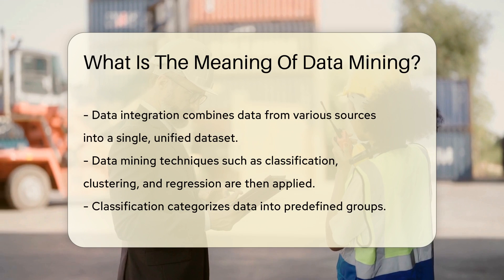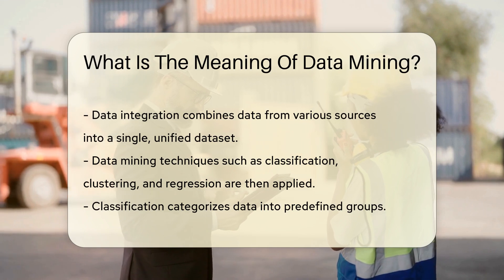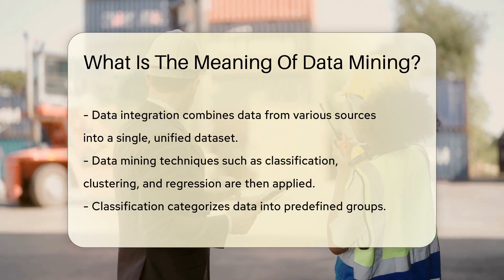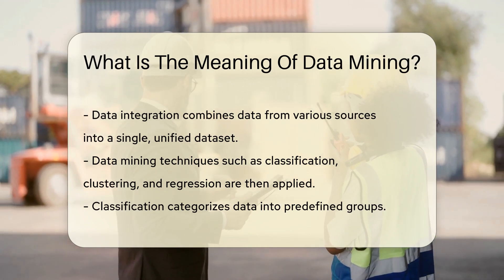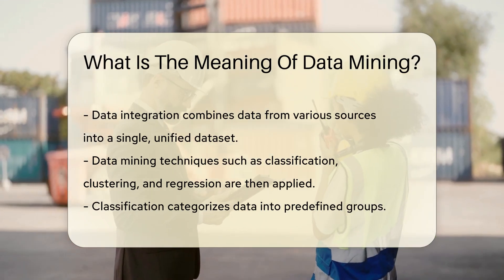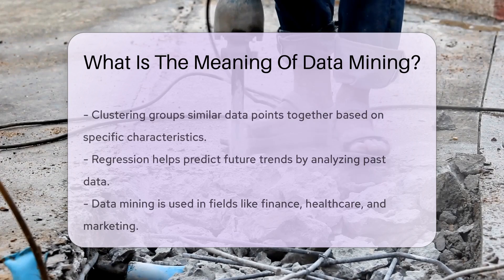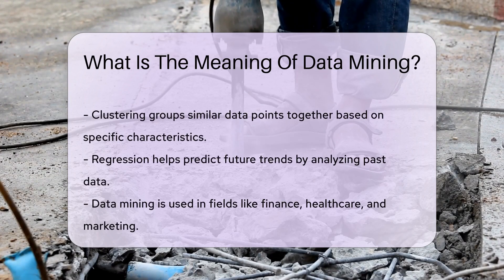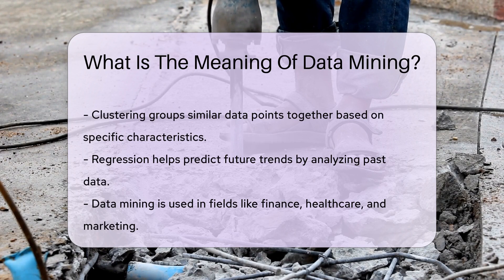Classification is used to categorize data into predefined groups. Clustering groups similar data points together based on specific characteristics. Regression helps predict future trends by analyzing past data.